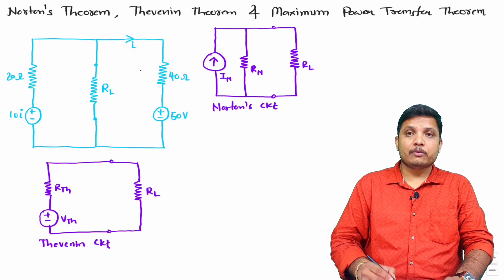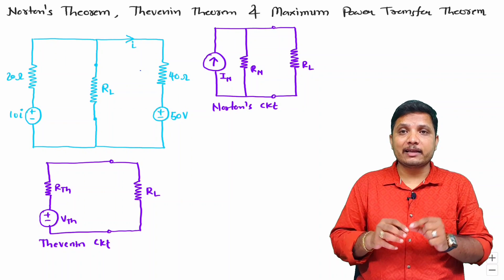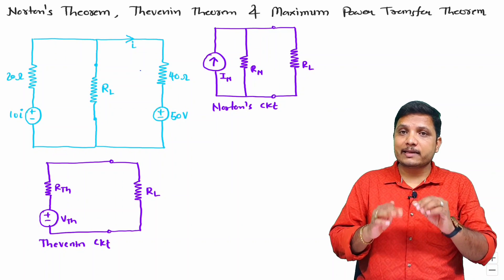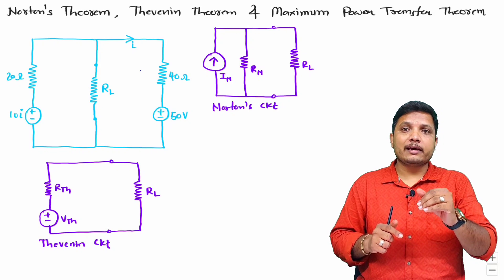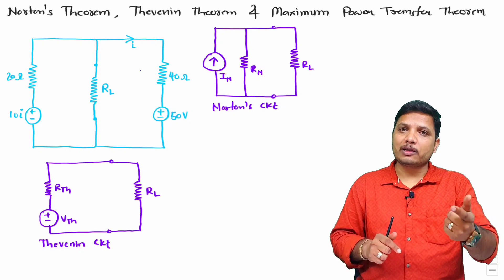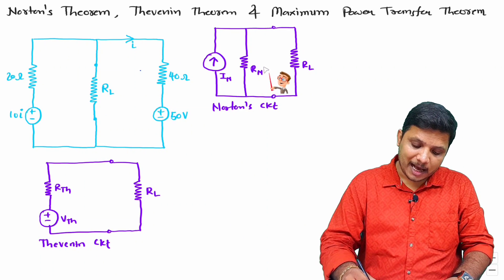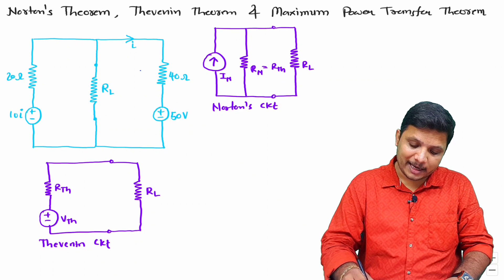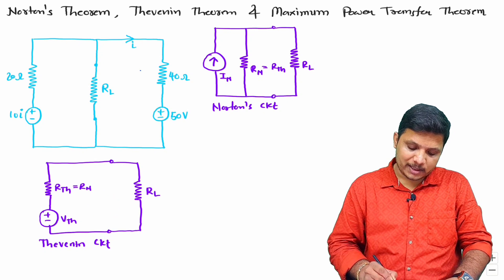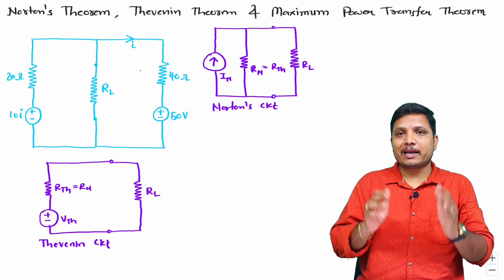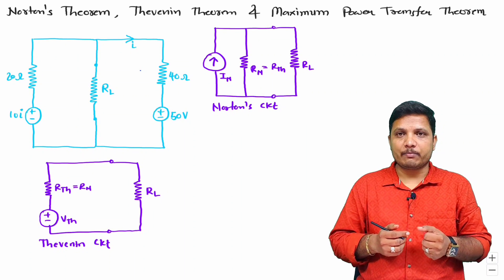The process of calculating R_th and R_n is the same, and the value of both is the same. R_n equals R_th — the process and value are identical.